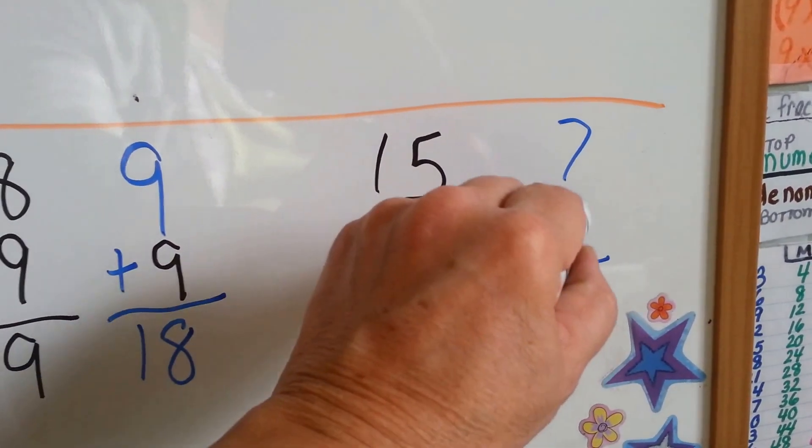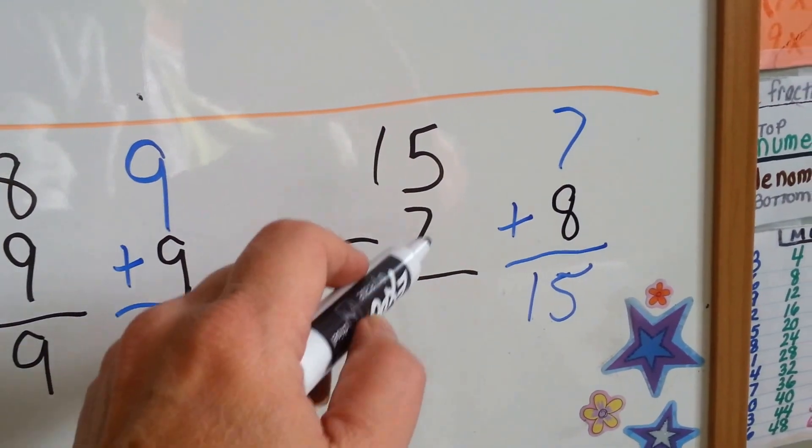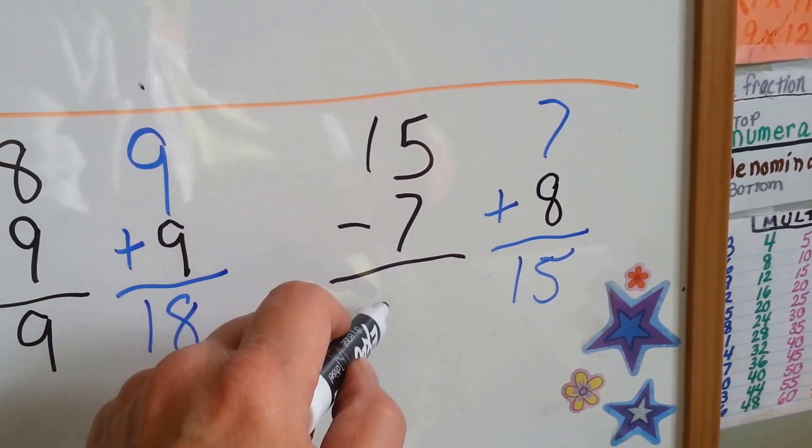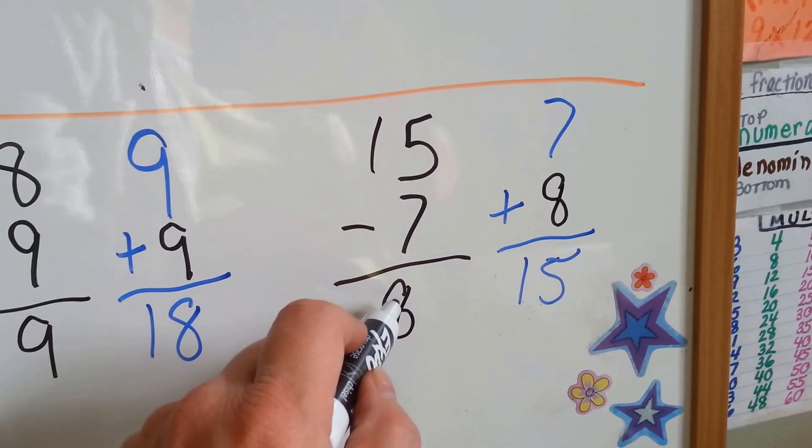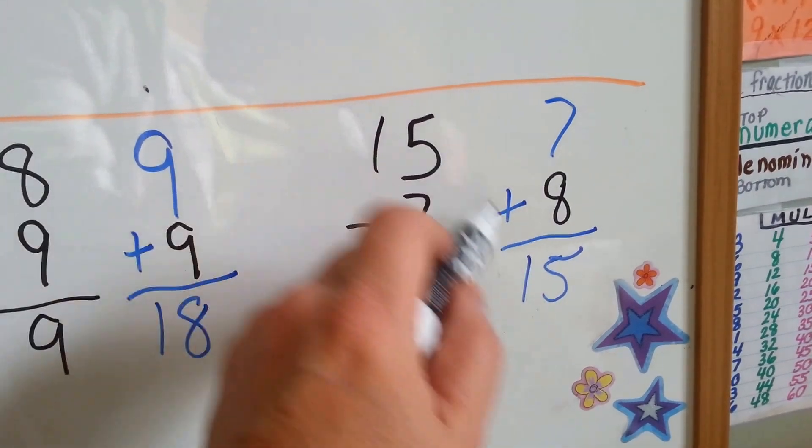7 plus 8 is 15. That means 15 take away 7 is 8. See how it's a fact family? Here's the 7 and the 8, the 7 and the 8, and the 15.